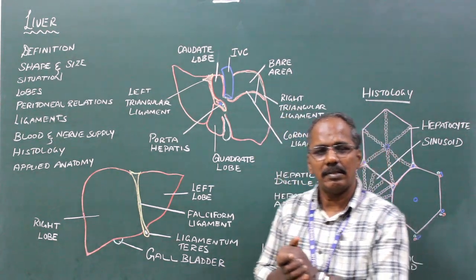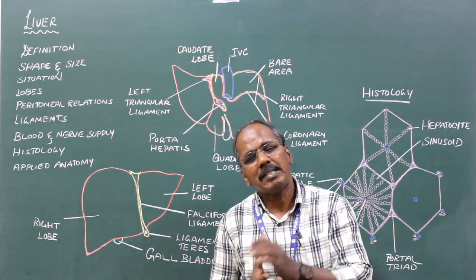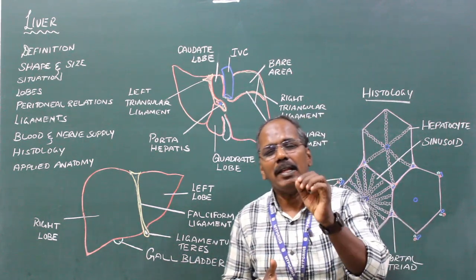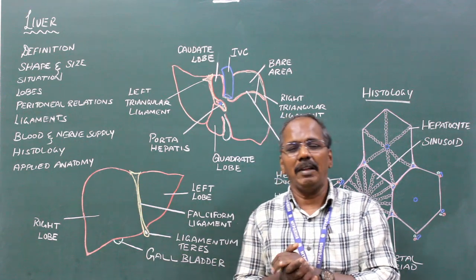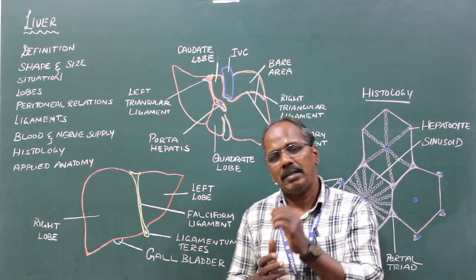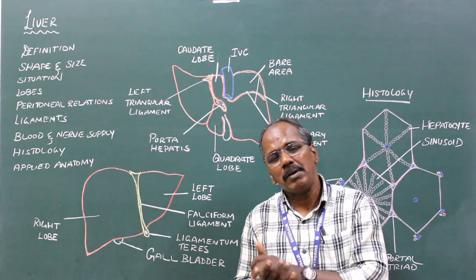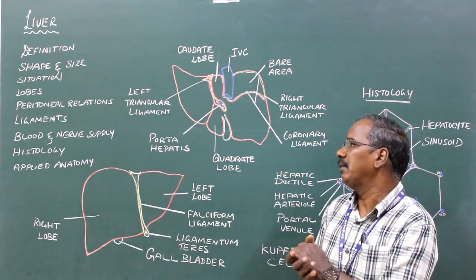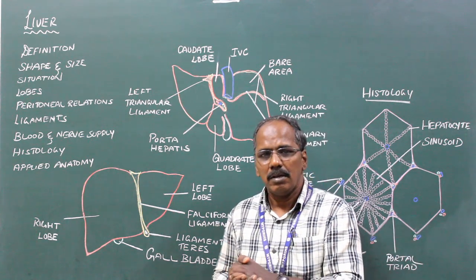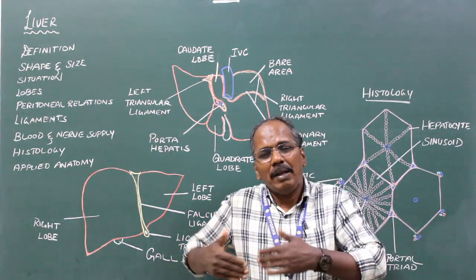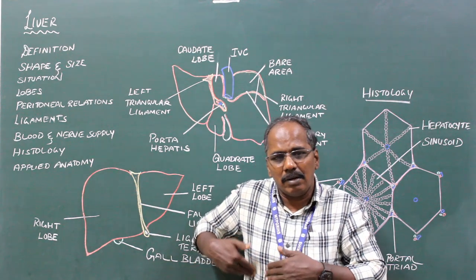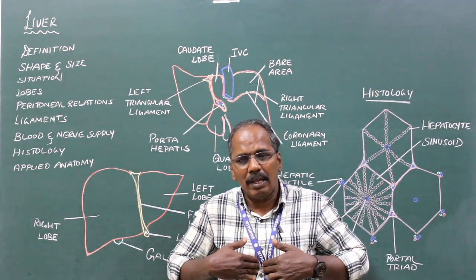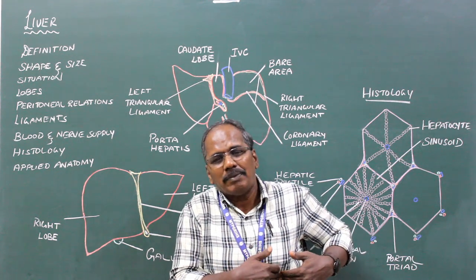Size. In fetus and children it weighs about one-eighteenth of the total body weight. In adults it weighs about one-fortieth of the total body weight. Situation: it is mainly situated in the right hypochondrium and extends into the epigastric and left hypochondrium.